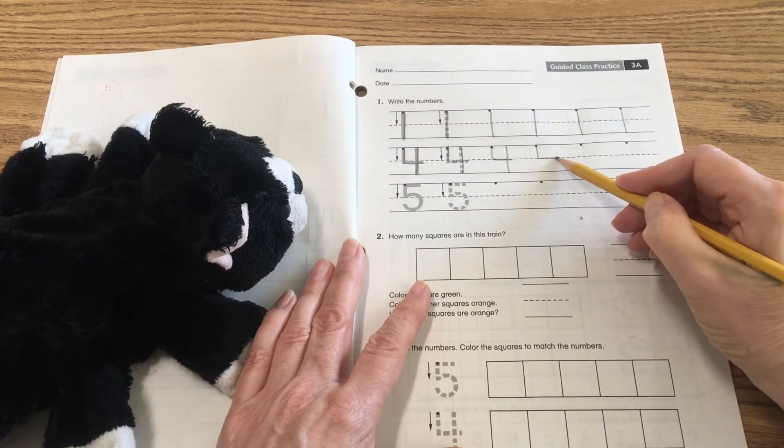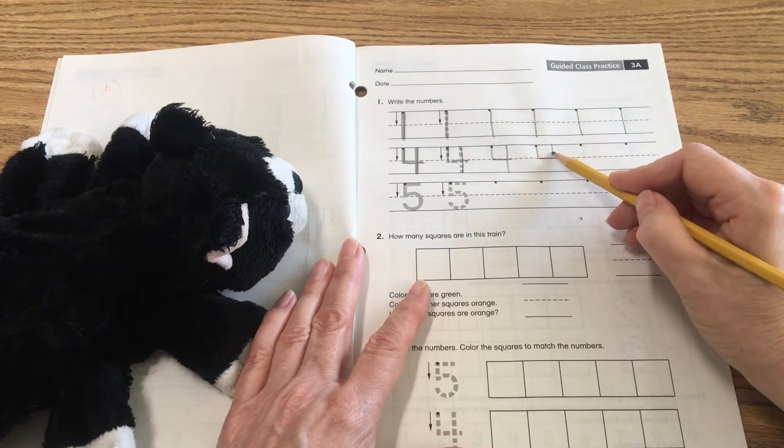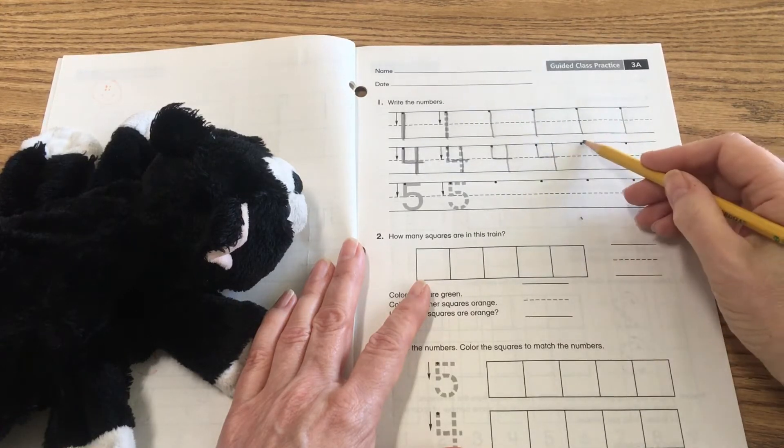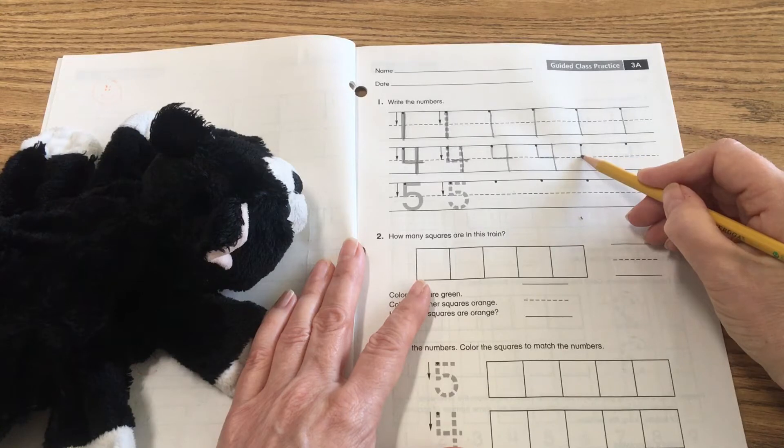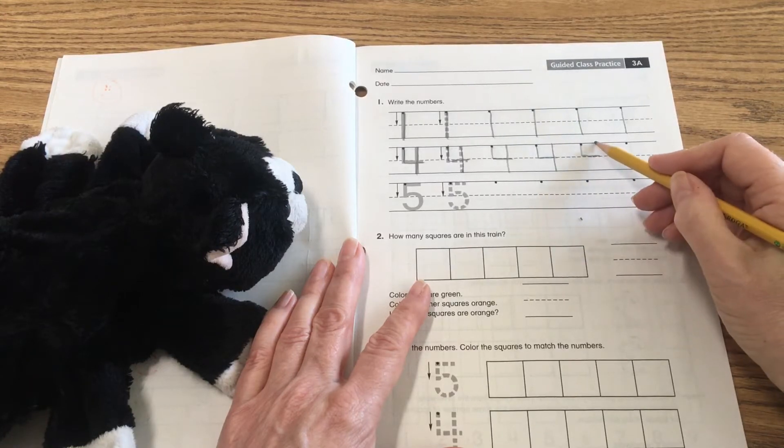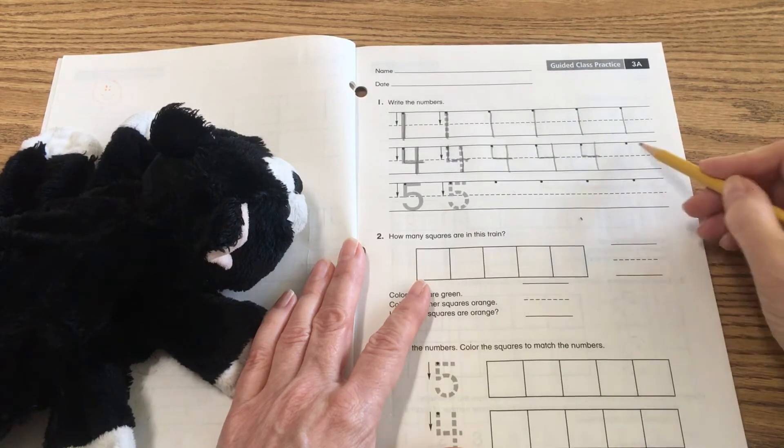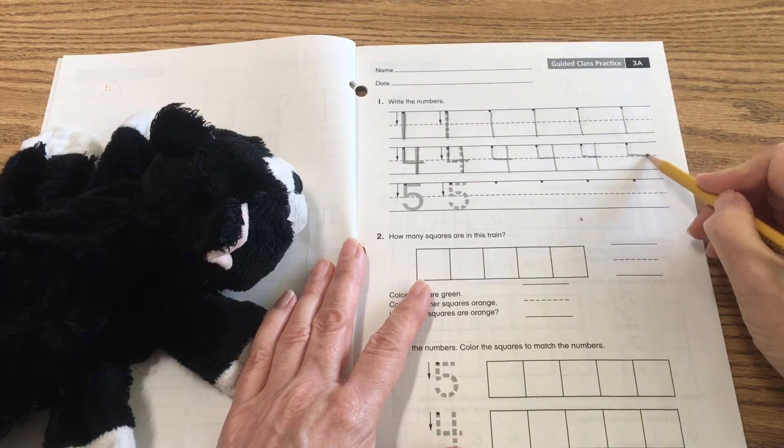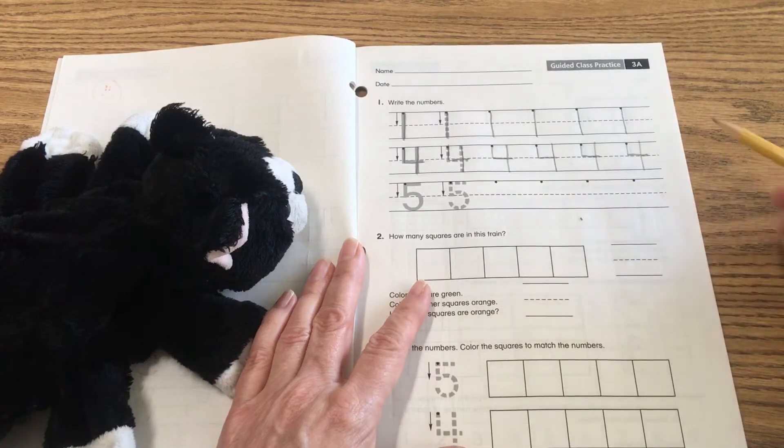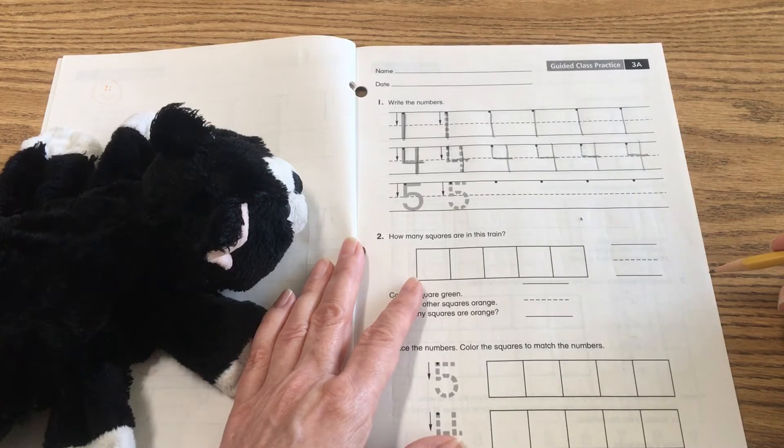Down, over, kind of like a backwards L. Go to the top, and go down. Another four right here. Down, over, go to the top, and straight down. Down, over, go to the top, and straight down. And there's our last four right there. Great job.